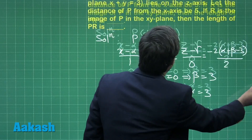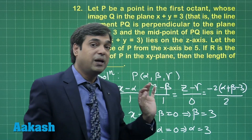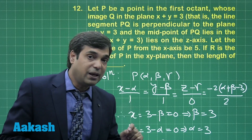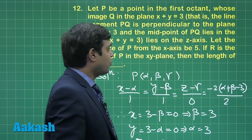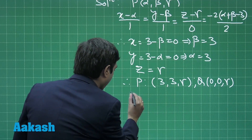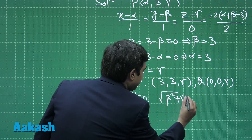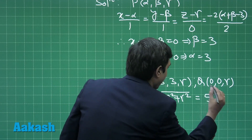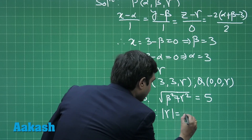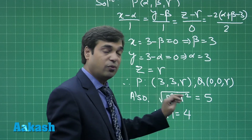The next information given in the question is that the distance of point P from the x-axis is 5. For a point P(α, β, γ), its distance from the x-axis is simply √(β² + γ²). Here we have √(β² + γ²) = 5. Now β = 3, meaning |γ| = 4, because it becomes 25 − 9 = 16, giving γ² = 16, so modulus of γ equals 4.